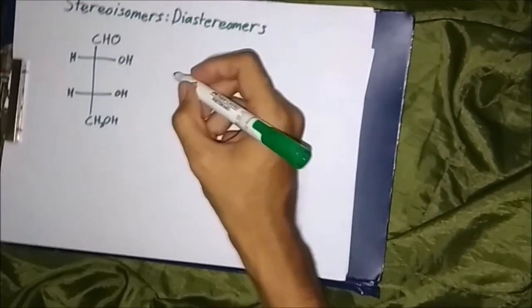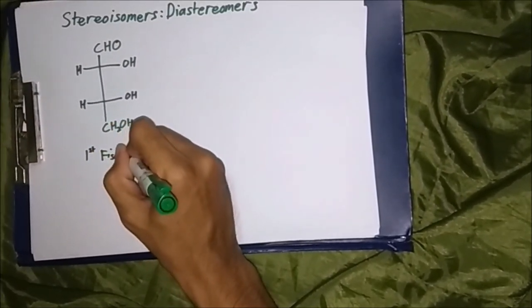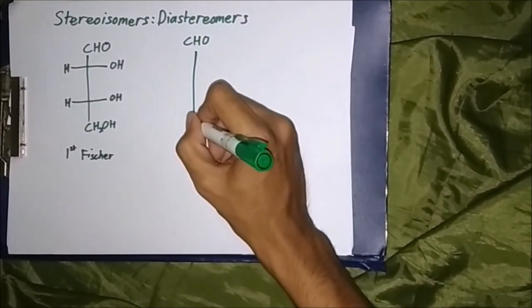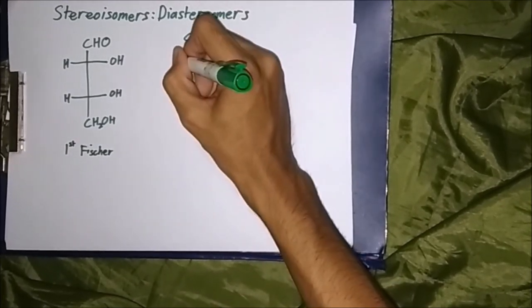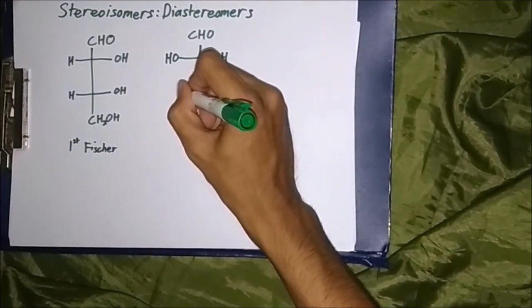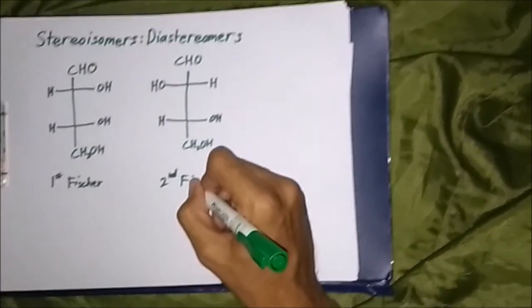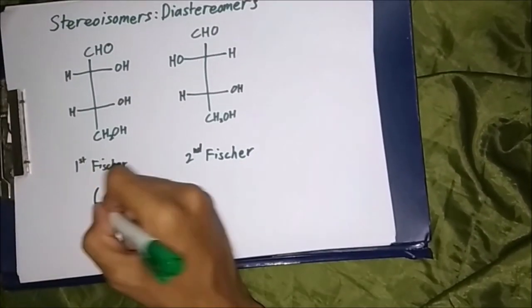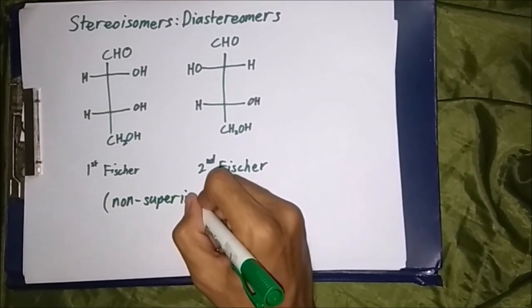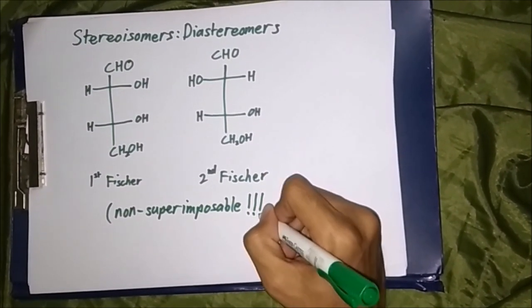Diastereomers are very different from one another. For example, we use the first Fischer projection and compare it to the second Fischer projection. Based on this drawing, you can see that on chiral carbon number two, the hydroxyl group is parallel to the one from the Fischer projection. They are non-superimposable to one another - that is what diastereomers means.